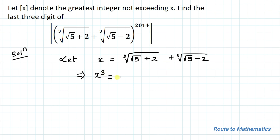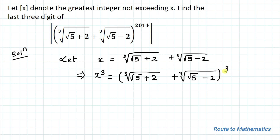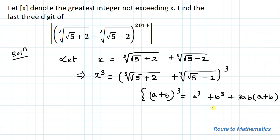we have x³ equals to (∛(√5+2) + ∛(√5-2))³. We know an algebraic identity that is (a+b)³ = a³ + b³ + 3ab(a+b). By applying this algebraic identity, our equation becomes x³ equals to: